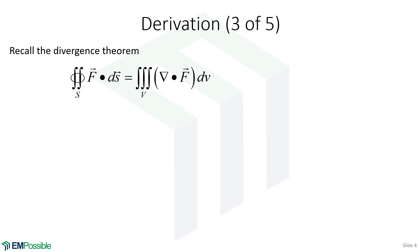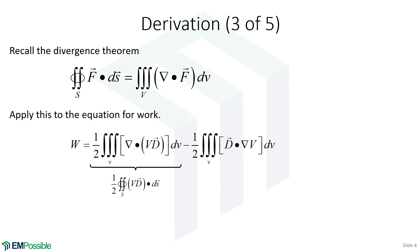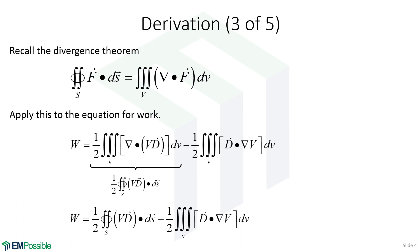Remember the divergence theorem. The divergence theorem lets us convert between a closed contour surface integration and a volume integral of divergences. This is the total energy with our two integrals. We have a volume integral of a divergence — the right-hand side of the divergence theorem — so we can write this as a closed contour surface integration. We replace that volume integral with this closed contour surface integral and end up here.